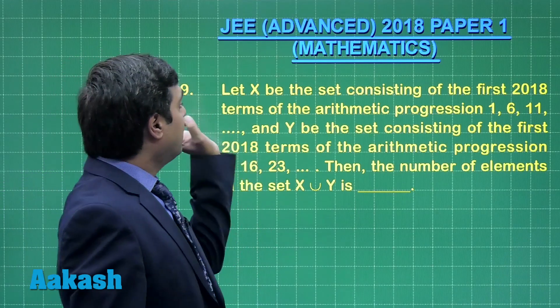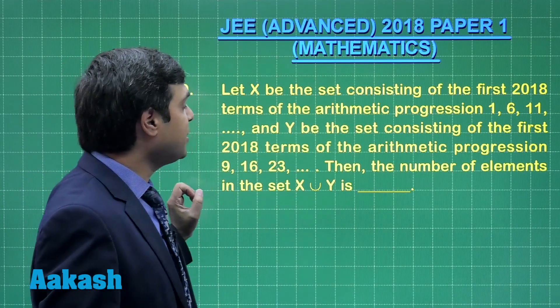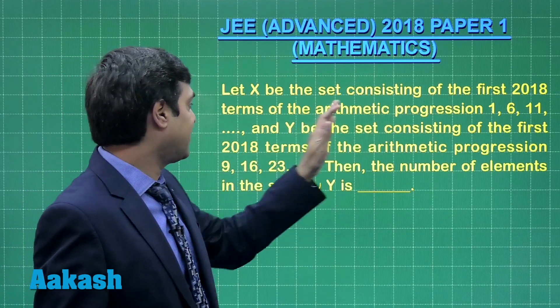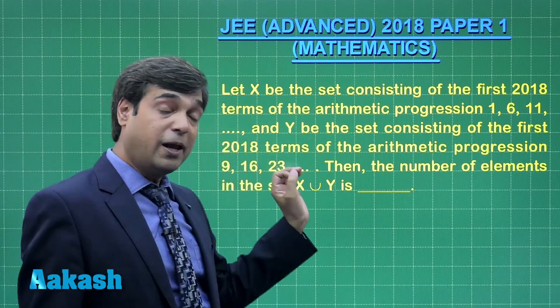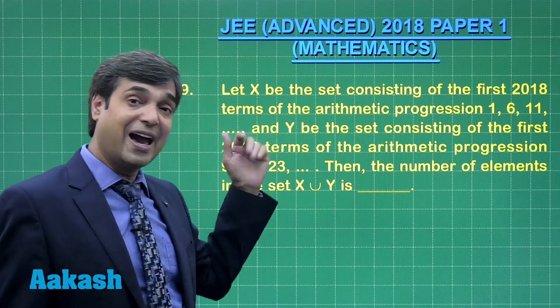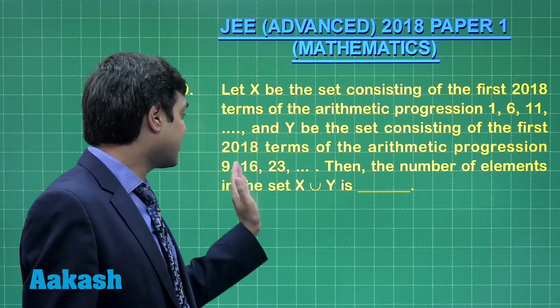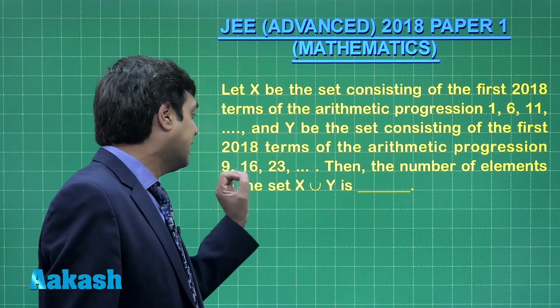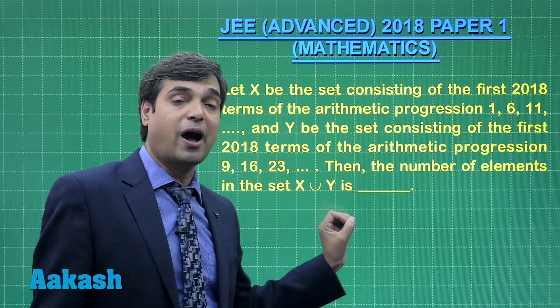Moving to question number 9. Let X be the set consisting of first 2018 terms of AP 1, 6, 11 and so on. Y be the set consisting of first 2018 terms of another AP 9, 16, 23 and so on. Then the number of elements in the set X union Y is.